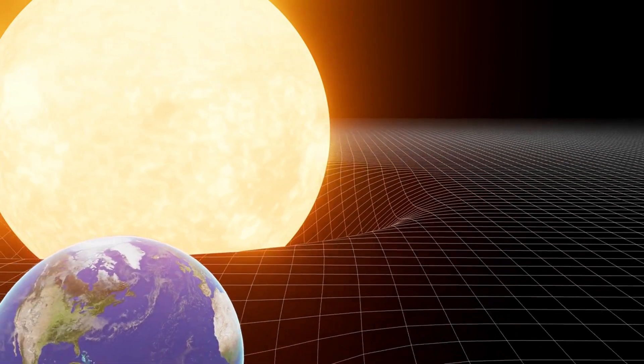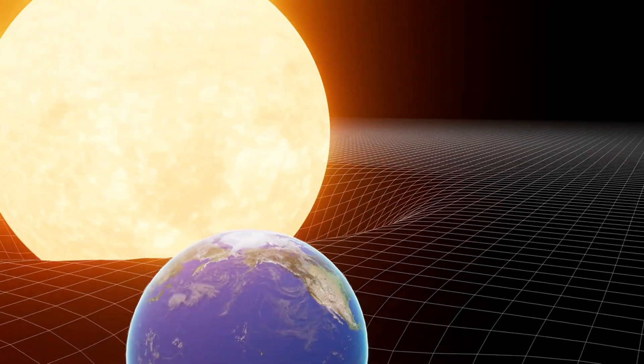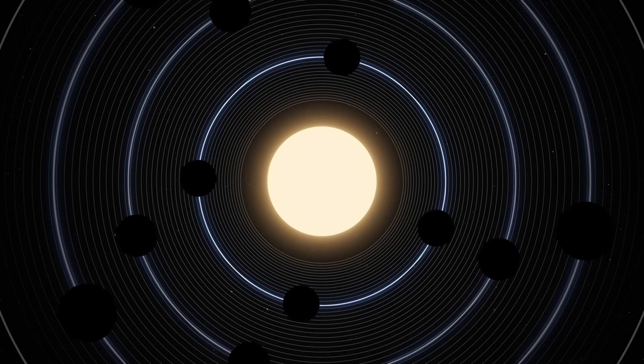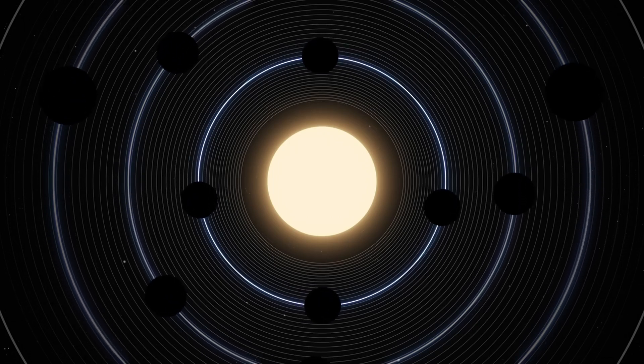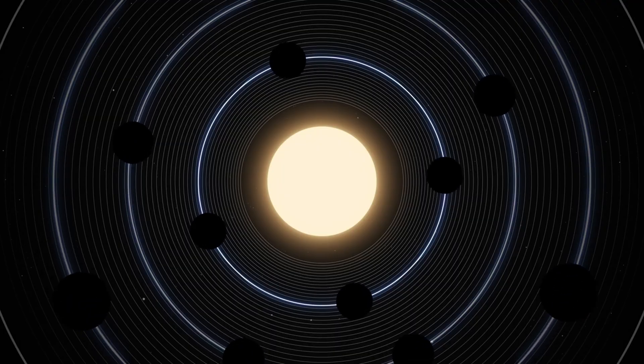An orbital period is the amount of time a planet takes to complete one full orbit around the sun. We will examine the intriguing and varied orbital periods of the planets in our solar system in this video.